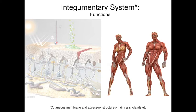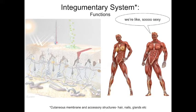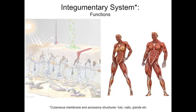Anatomy is an observational science — we observe the gross structure of the body and tissues under microscopes, but sometimes the function of something is not so obvious. To understand the function of a structure, enzyme, or gene, scientists often carry out loss of function experiments, where they remove the object and see what happens. Here we're going to carry out a thought experiment looking at hypothetical skinless people to see what happens to them without skin.